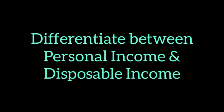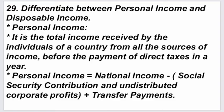Personal income. It is the total income received by the individuals of a country from all the sources of income before the payment of direct taxes in a year. Personal income is equal to national income minus social security contribution and undistributed corporate profits plus transfer payments.